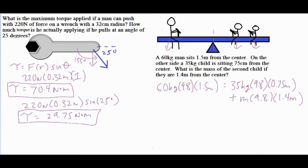So from there it's fairly simple. All you have to do is go ahead and drop that 9.8 and simplify it a little bit. And then you would take 60 times 1.5 equals 35 times 0.75 plus m times 1.4, do a little bit of algebra from there and then you got your answer.